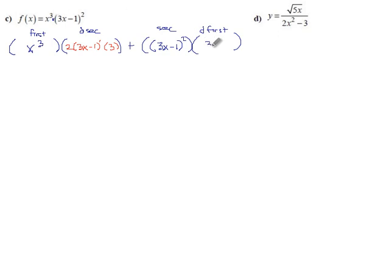It's x to the third, so 3x squared would be our derivative there. And now we clean up: 2 times 3 is 6. We get 6x cubed times 3x minus 1, plus 3x squared. I'm just changing the order here because monomials first looks nicer to me.